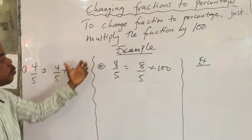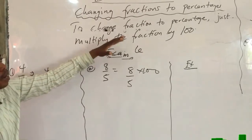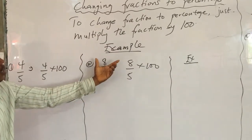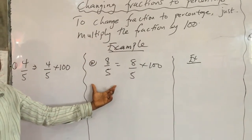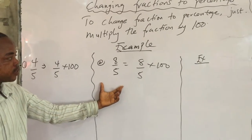So, in order to change from a fraction to a percentage, you just have to multiply the fraction by 100. The following examples that you are going to work with will explain it better for you to understand. I hope it is clear.